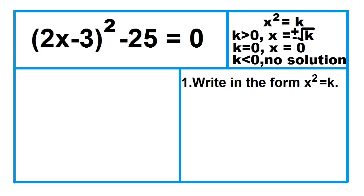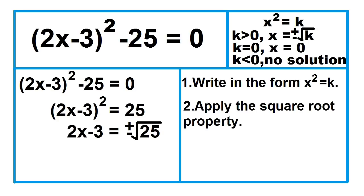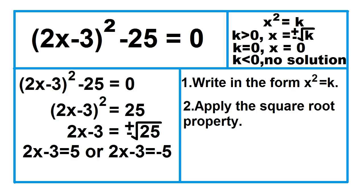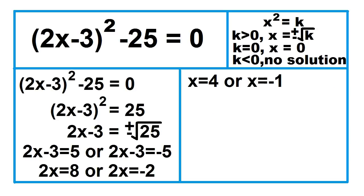Another example. Write in the form x squared equals k by adding 25 to both sides of the equation. The resulting equation is the square of the quantity 2x minus 3 equals 25. Next, apply the square root property: 2x minus 3 equals positive square root of 25, or 2x minus 3 equals negative square root of 25. Separate into two equations. Add 3 to both sides: 2x equals 8 or 2x equals negative 2. Divide both sides by 2: x equals 4 or x equals negative 1.